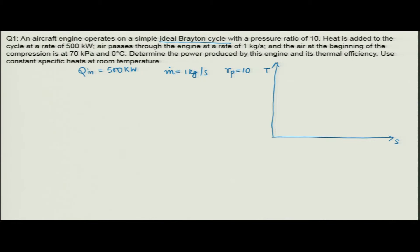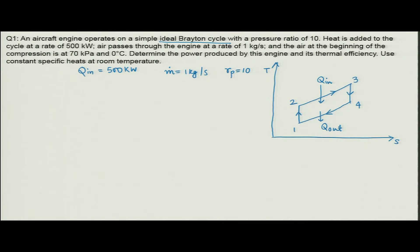It is an ideal Brayton cycle. The first step is an isentropic compression process from 1 to 2. The second step is constant pressure heat addition from 2 to 3, that is the heat addition Q_in. The third step is isentropic expansion in a turbine, and the fourth step is 4 to 1, that is constant pressure heat rejection, Q_out.